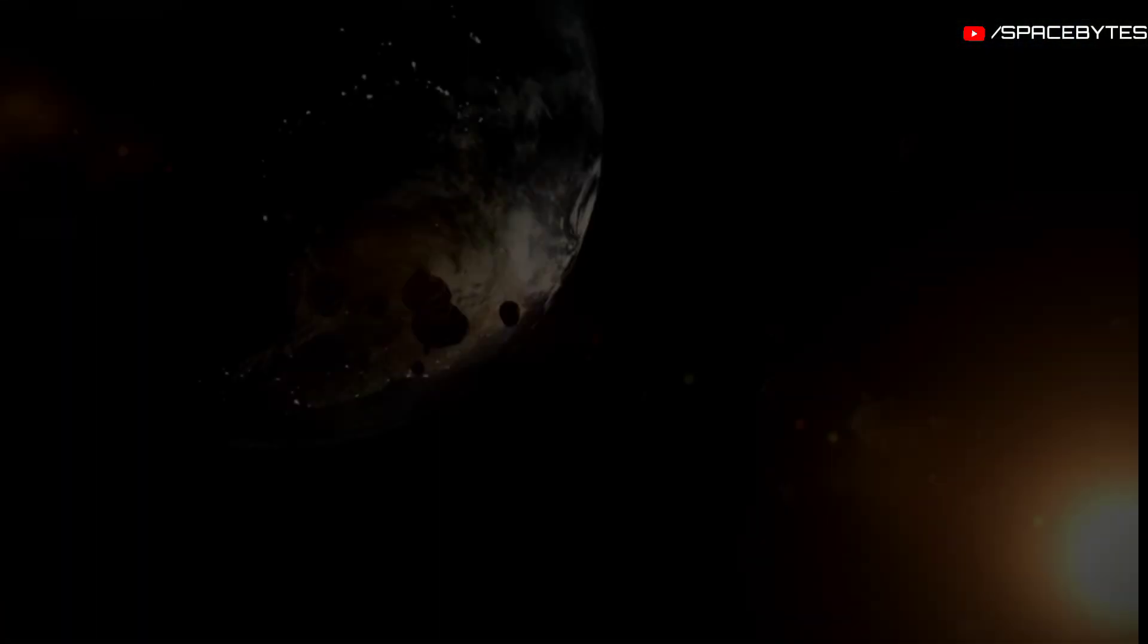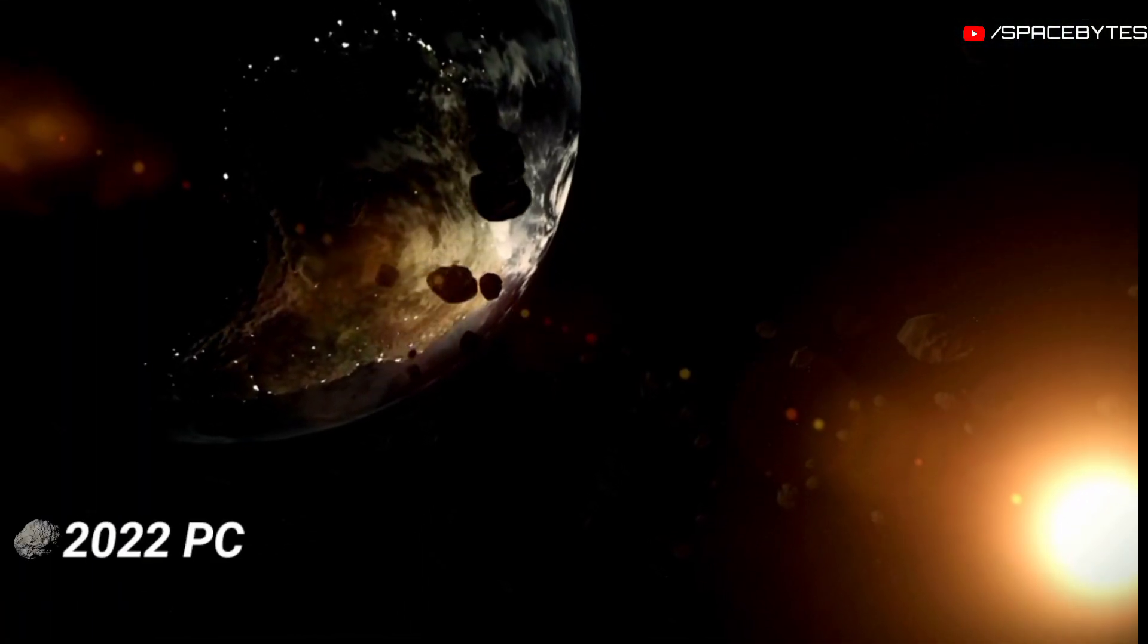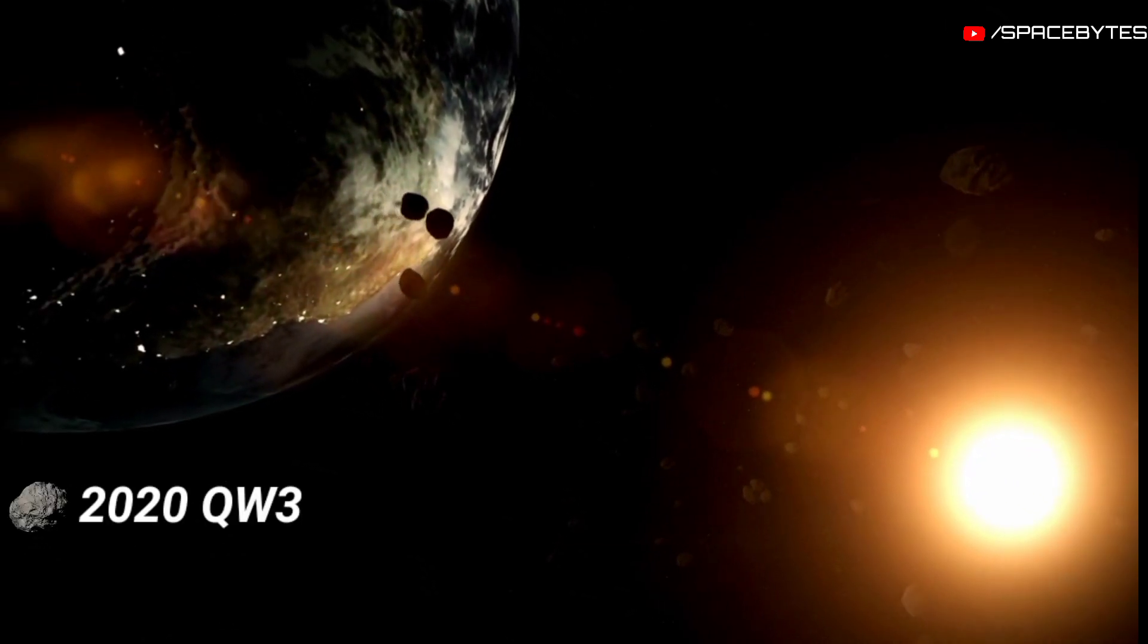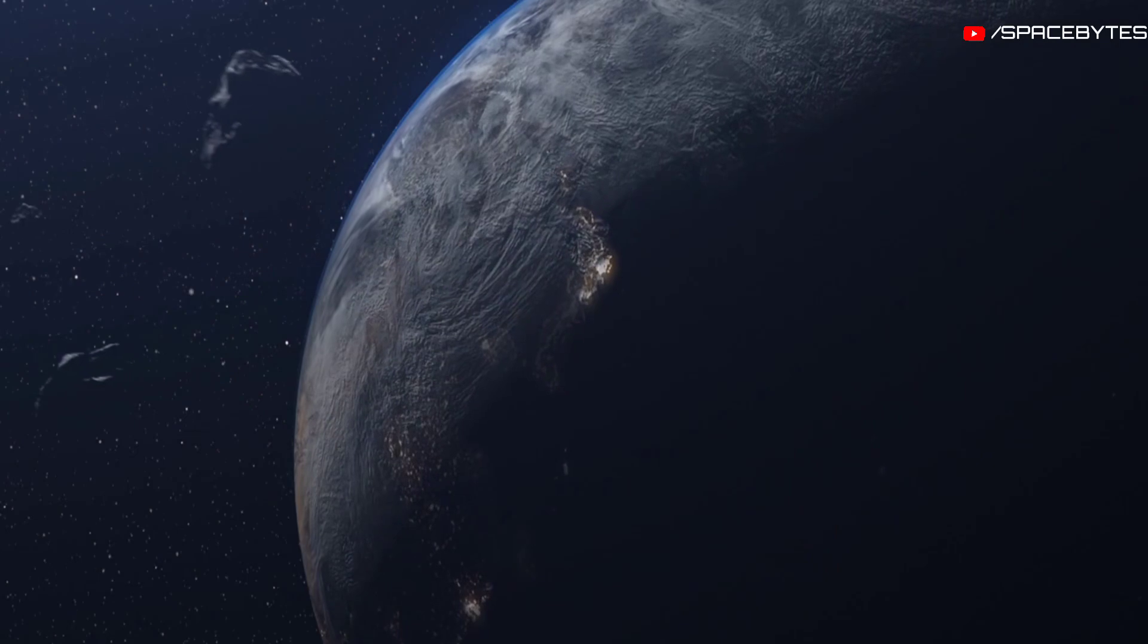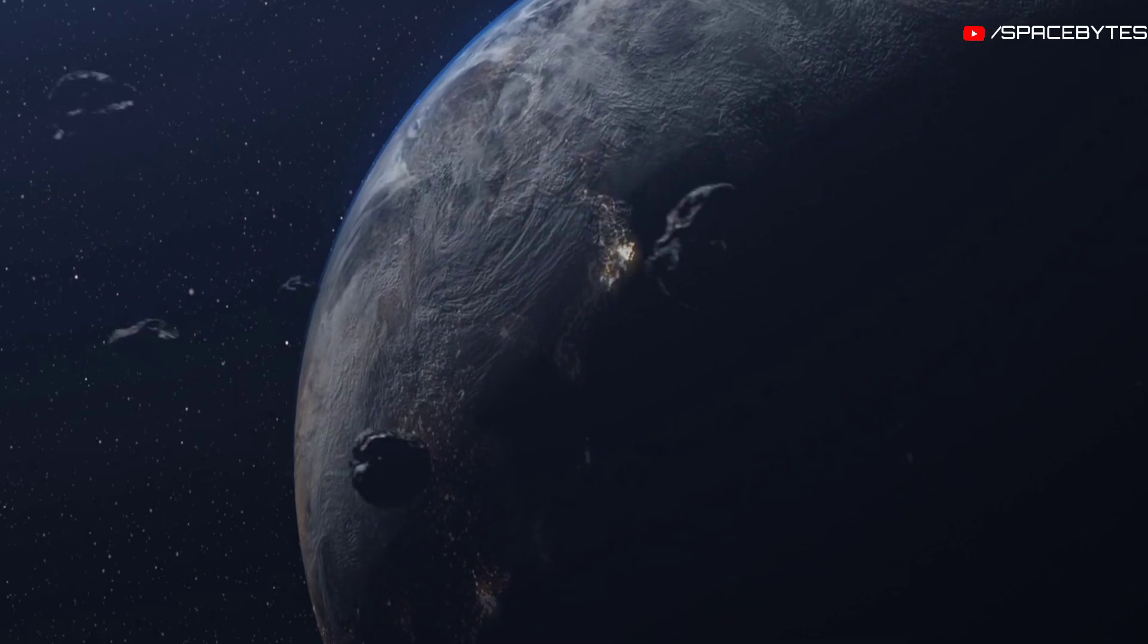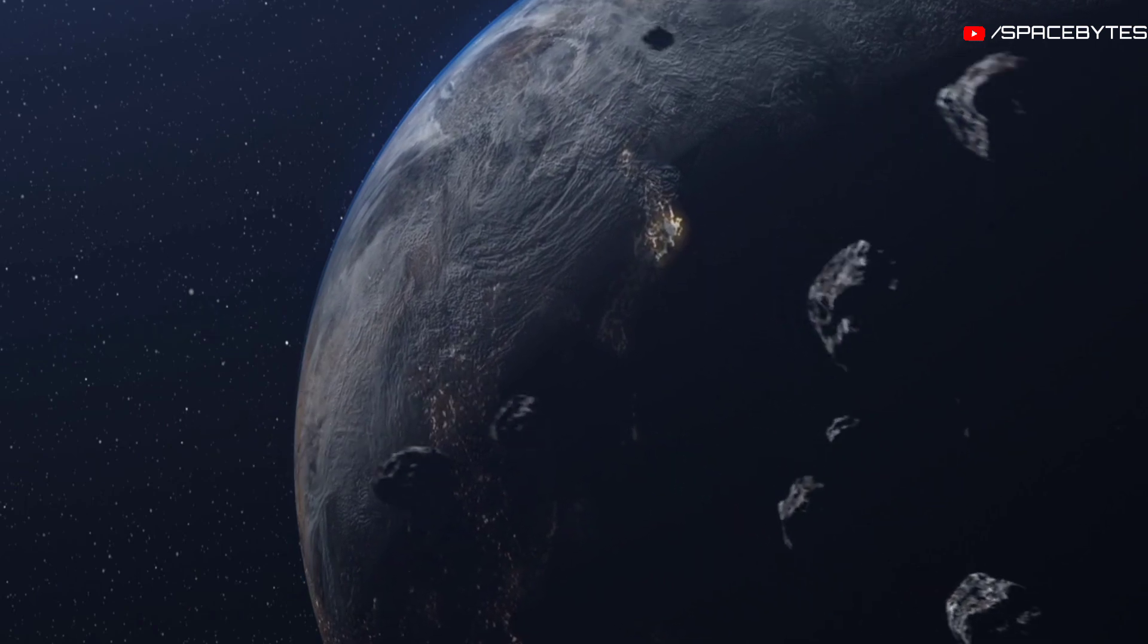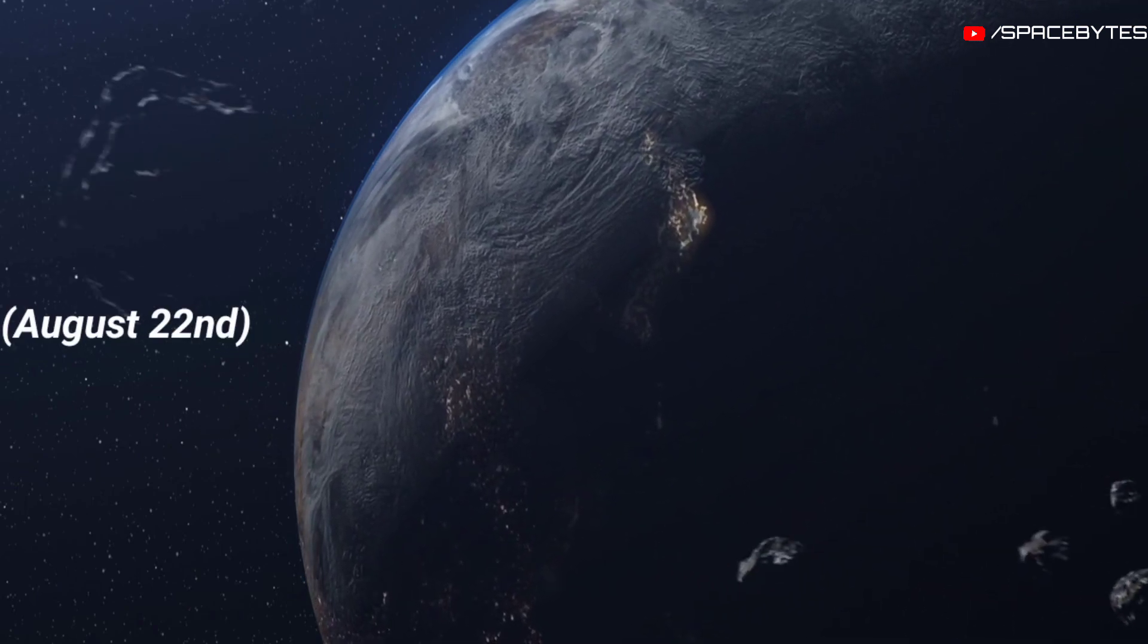According to NASA, three massive asteroids - 2022 PC, 2019 AV-13, and 2020 QW-3 - are moving towards Earth at very high speed and are expected to make their closest approach to the planet on August 18th, August 20th, and August 22nd.